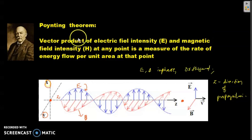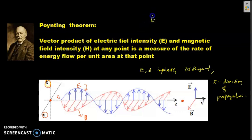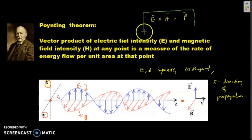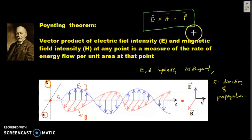Let's return to the Poynting theorem. The Poynting theorem states that the vector product of electric field intensity E and magnetic field intensity H represents the rate of energy flow per unit area. The rate of energy flow is the power P. This is one of the most important theorems used in electromagnetic field theory.